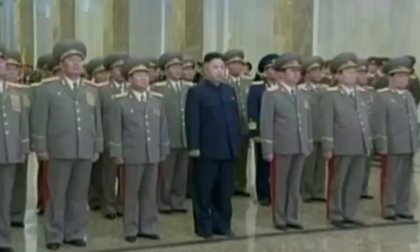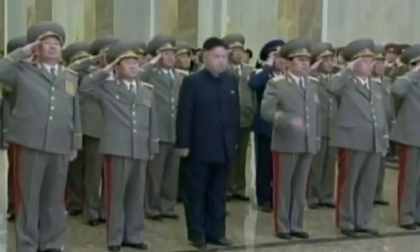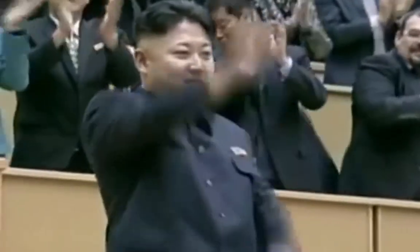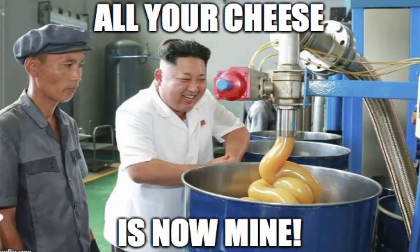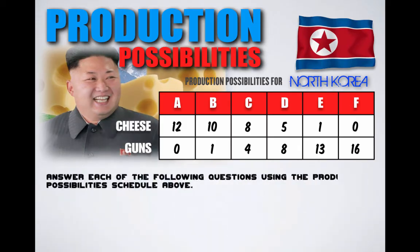Let's go to North Korea. We've already talked about how North Korea is a centrally planned economy — Kim Jong-un decides everything. And if there's one thing that Kim Jong-un likes more than guns, it's cheese. Lots of cheese. The following schedule shows the production possibilities for North Korea. Given their scarce amount of resources, North Korea can produce two goods: guns and cheese. Answer each of the following questions using the production possibility schedule above.